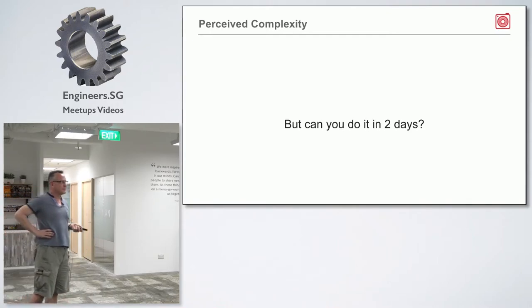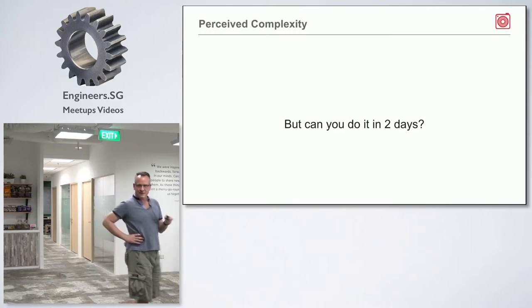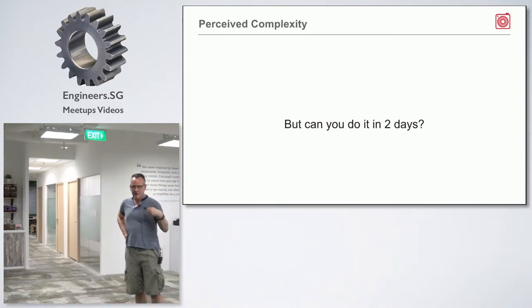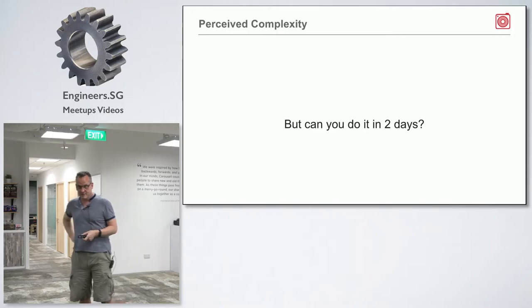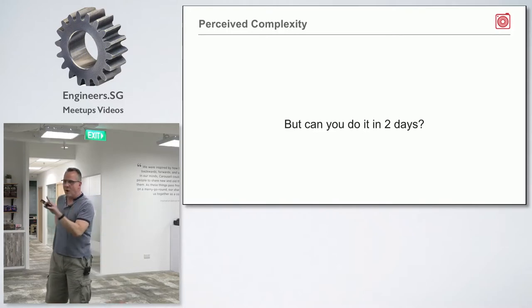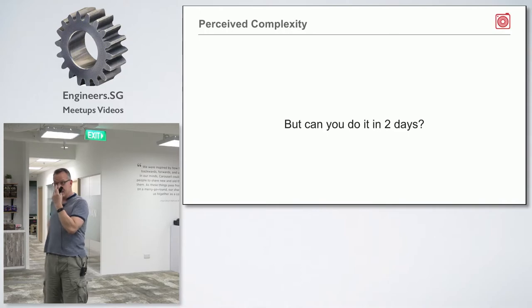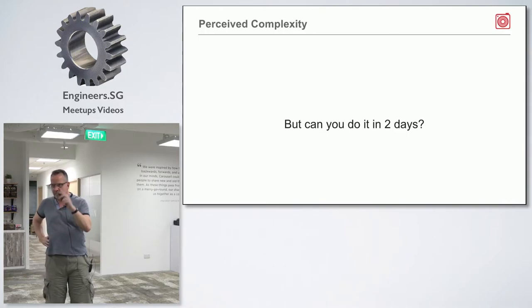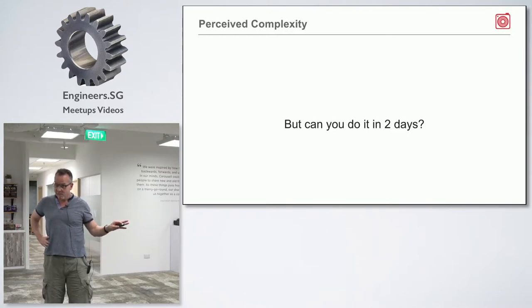In terms of perceived complexity, always ask: can you get this done in two days? Don't make that equivalence to two points — it's a separate question. If you think you can get it done in two days, great. If you can't, break it down. It still might be a 13, but break it down into smaller pieces.